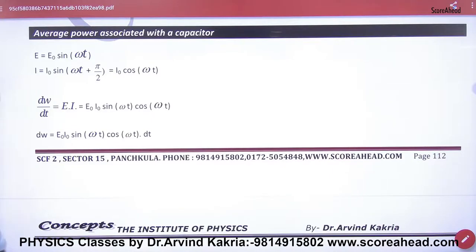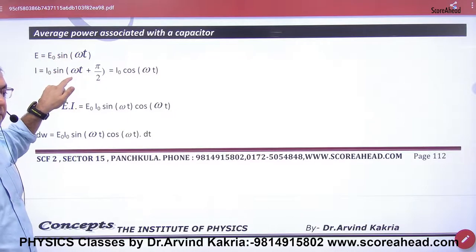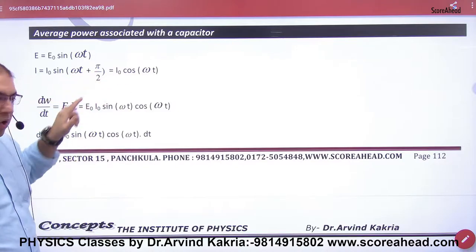The average power associated with a capacitor. In the capacitor, what is the EMF? E₀ sin ωt. What is the current? I₀ sin(ωt + π/2). Because the current is leading, solve it and the cosine is coming.